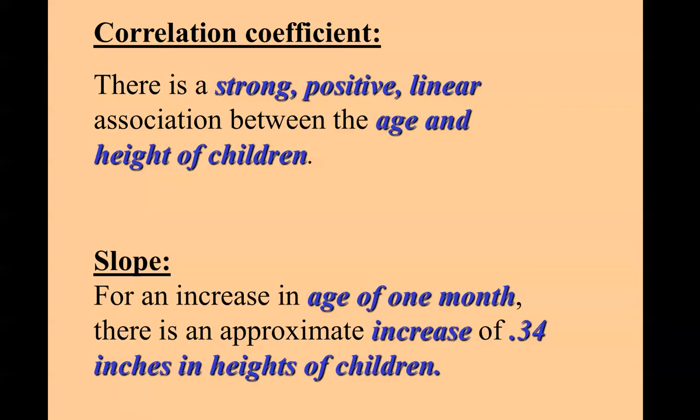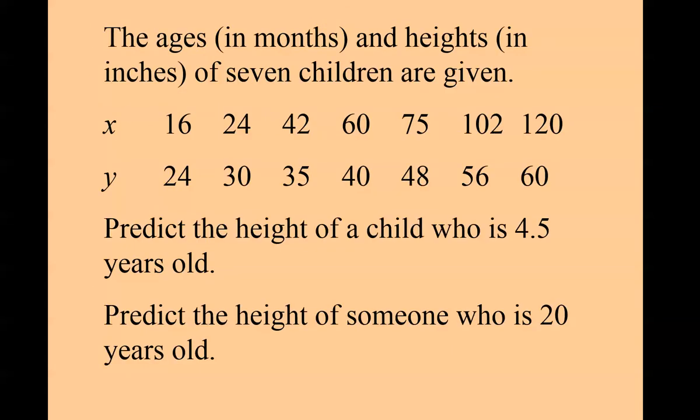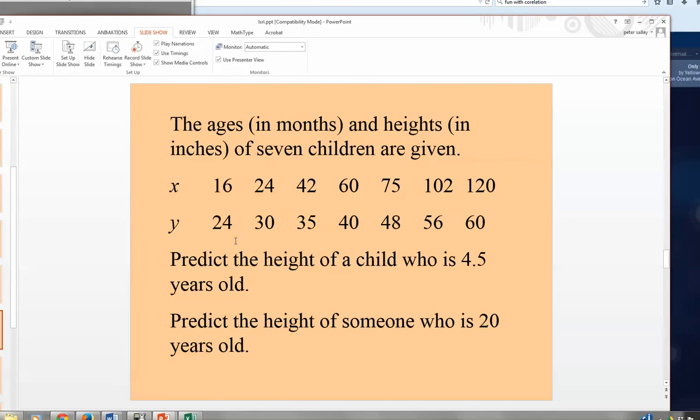Our slope would be: for an increase in age of one month, there is an approximate increase of 0.34 inches of heights of children. So the 0.34 was the slope of the line. It was positive, which meant it was an increase, and then we just filled in context of what the other information meant. X meant months and Y meant heights. Now we're going to use our calculator again and predict, because we have this nice lovely equation, the heights at those two ages.